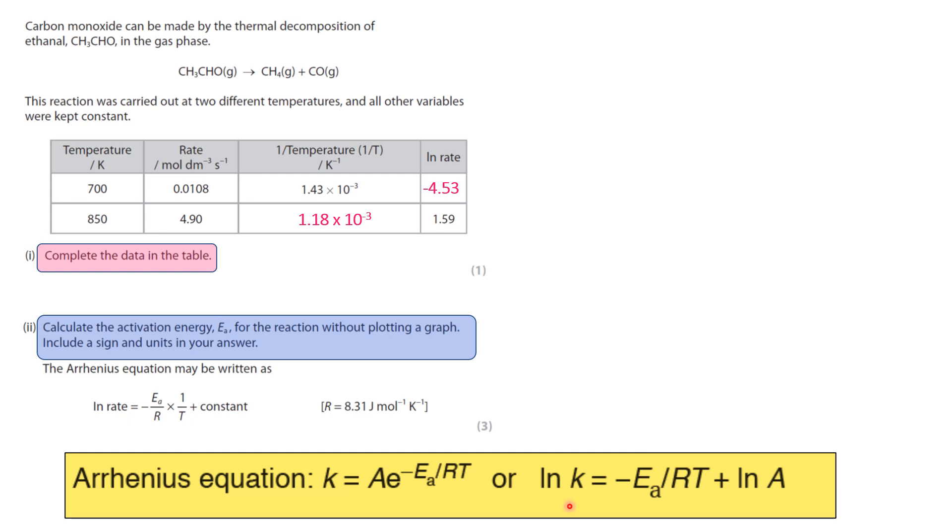and we'd just have a look at it and link it over to y equals mx plus c. So y would be natural log of k, so the y-axis would be ln k. And minus Ea over RT would be your mx, and then ln A will be plus c. So this is the constant or the y-intercept. And minus Ea over RT will be changed into minus Ea over R for the gradient or m, and 1 over T for the x-coordinate.